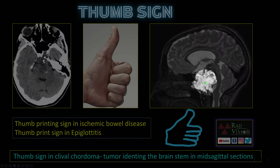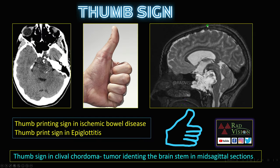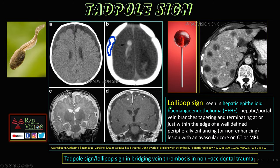Next, the thumb sign is seen in clival chordomas, where the hyperintense mass arising from the clivus indents over the brain stem, mimicking a thumb. Remember also the thumb printing sign in ischemic bowel disease and the thumb print sign or thumb sign in epiglottitis.